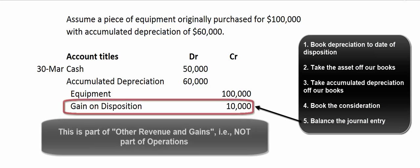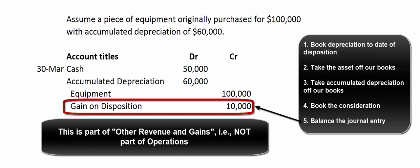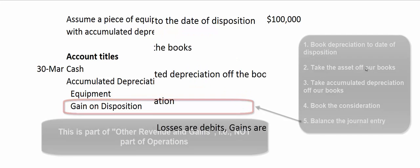Since we're not in the business of selling our used equipment — it's just ancillary to what we do — we're going to record that gain and include it on our income statement under other gains and revenue, or other revenue and gains. So it's separate from our operating income, but it's absolutely going to be on our income statement.